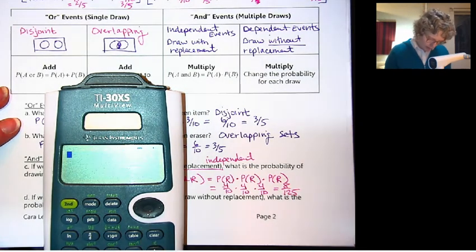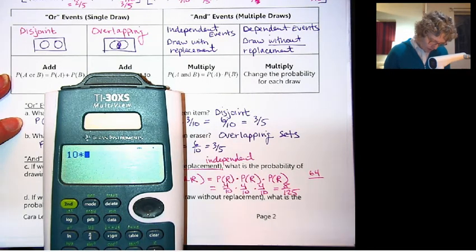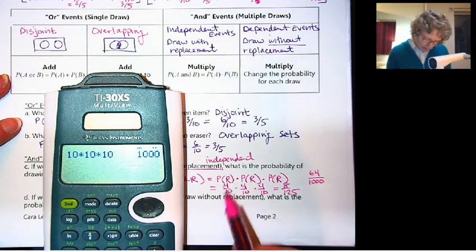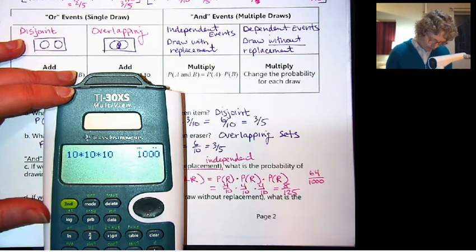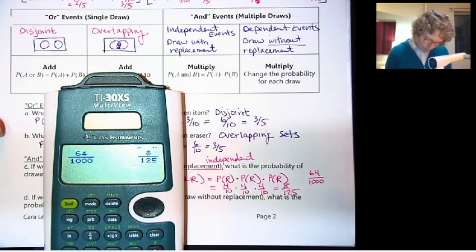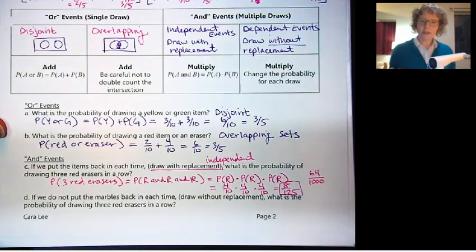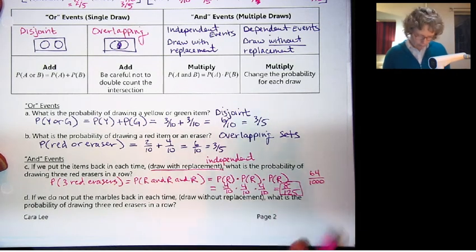Let's say you don't have a calculator that does that. You can do 4 times 4 times 4, 64 out of 10 times 10 times 10, 1,000. Now, it's a little harder to reduce. You could also go 64 out of 1,000 and reduce it for you. So 8 out of 125. That's pretty slim. It's not very probable that you would get 3 red erasers in a row. When you use AND, you're narrowing down the possibility, so there's smaller chance of getting red and a red and a red.